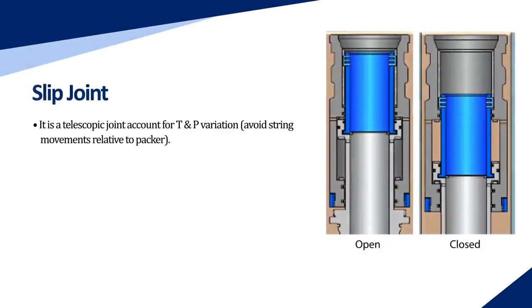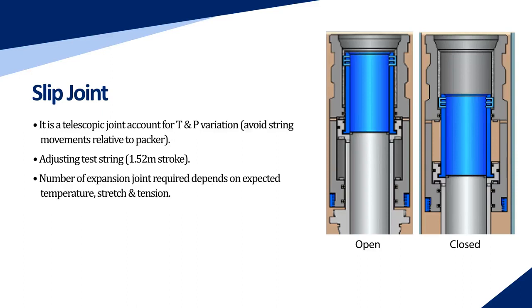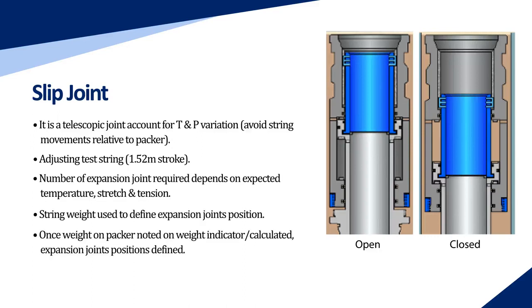Slip joint: it is a telescopic joint that accounts for temperature and pressure variation, avoiding string movements relative to the packer and adjusting the test string. It has a 1.52-meter stroke. The number of expansion joints required depends on the expected temperature, stretch, and tension. String weight is used to define expansion joint positions. Once the weight on the packer is noted on the weight indicator or calculated, the expansion joint positions are defined.